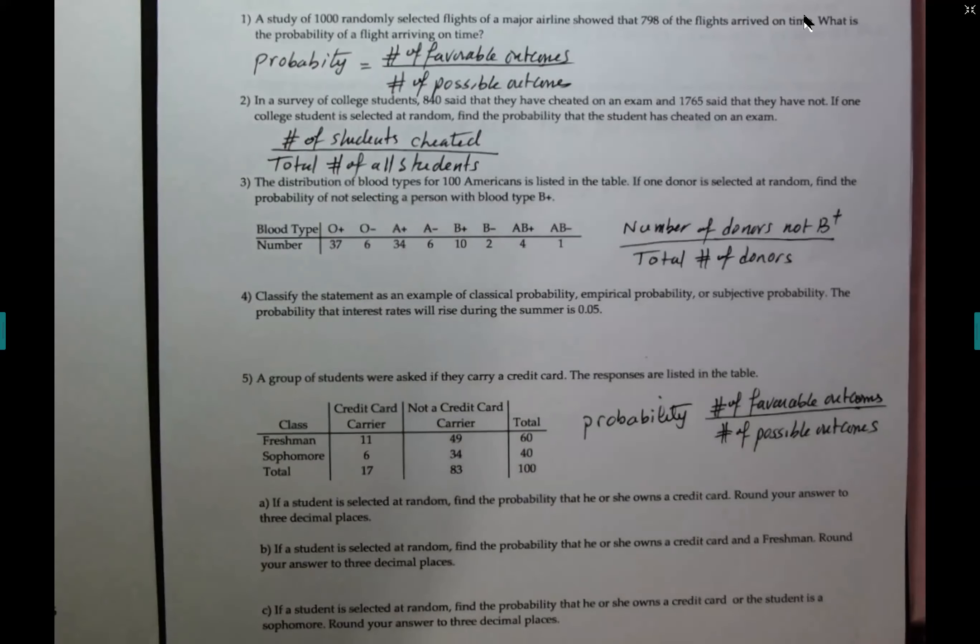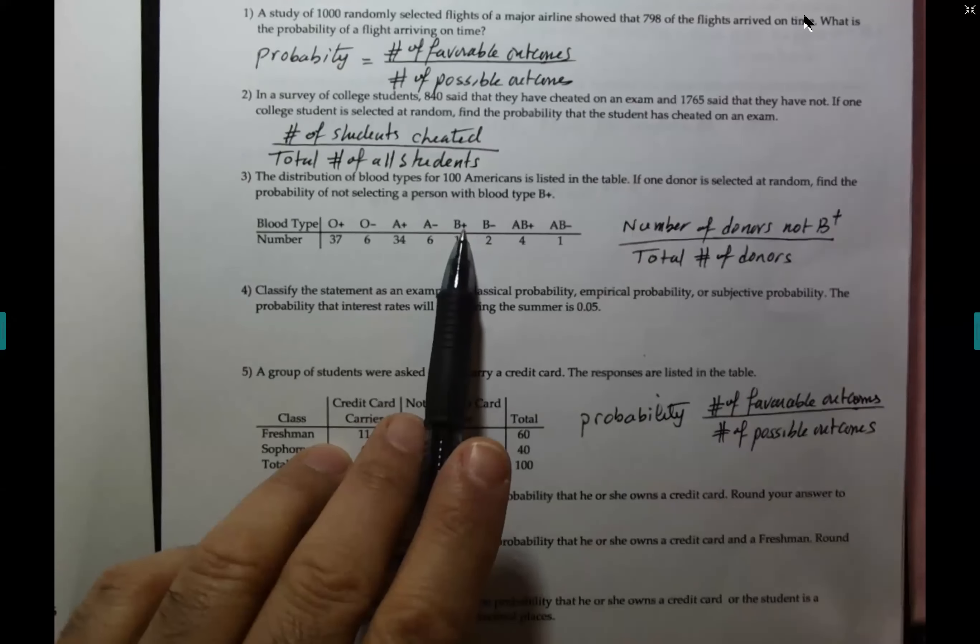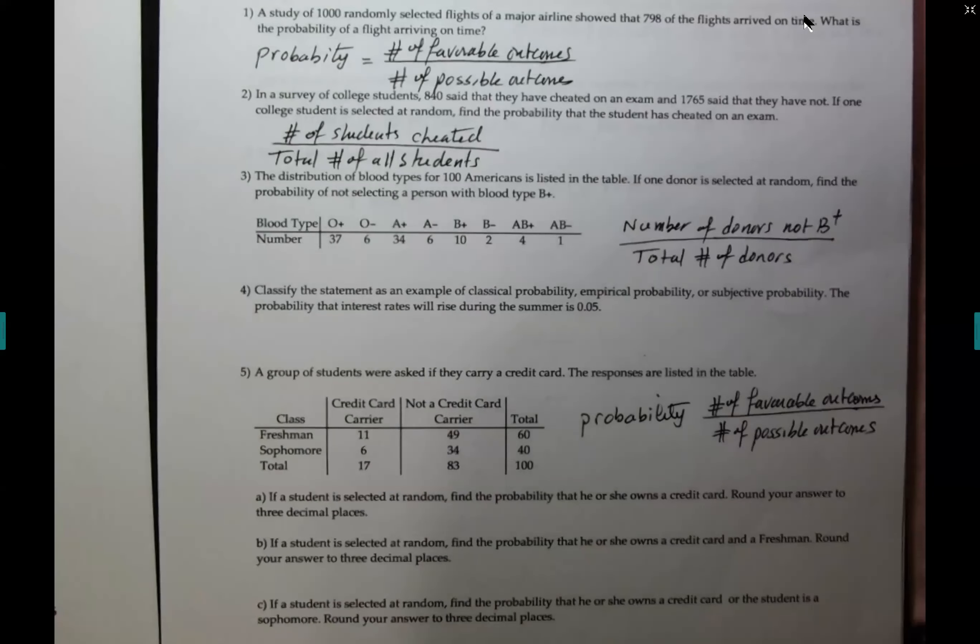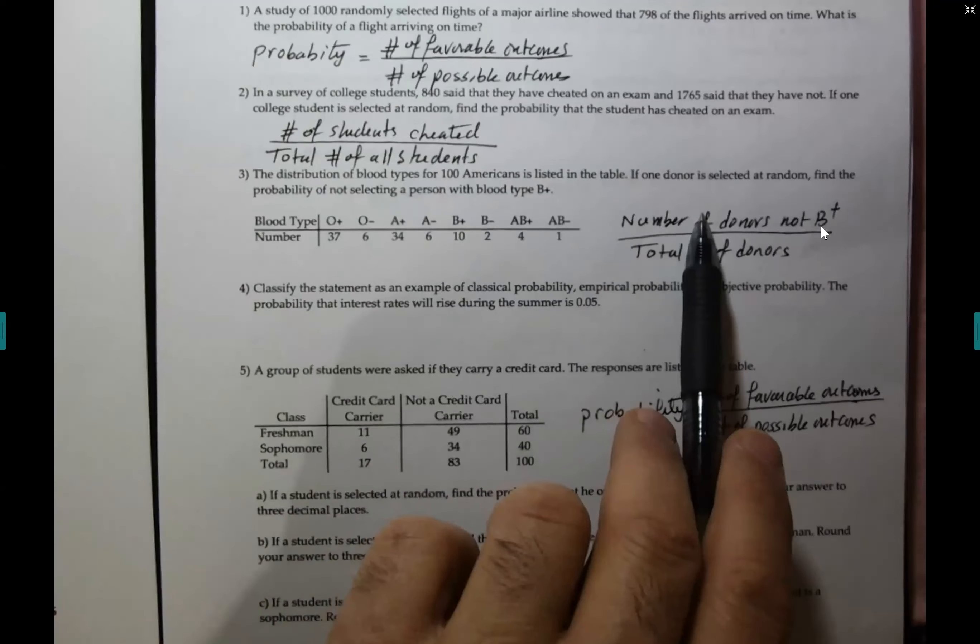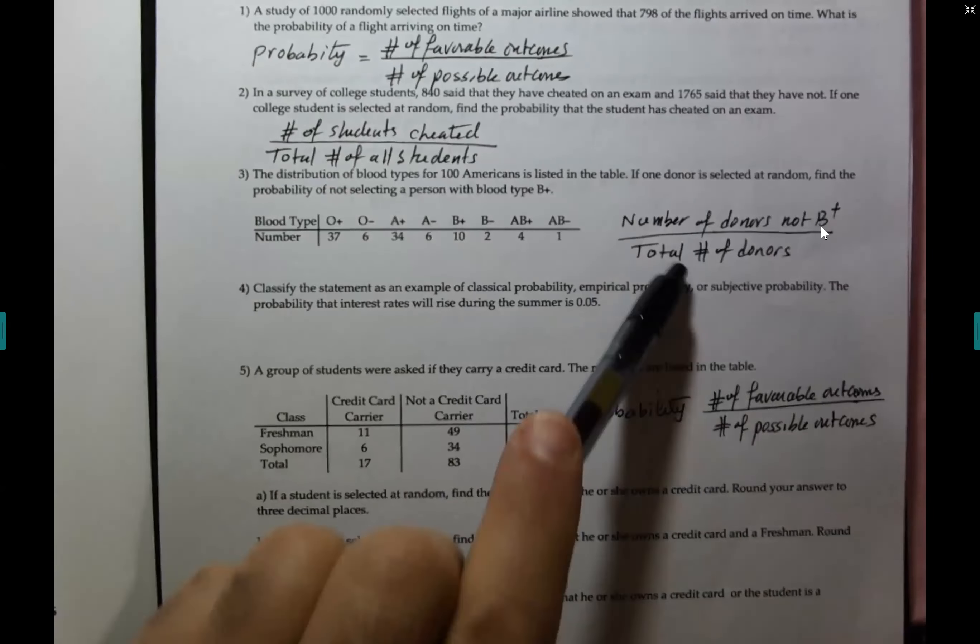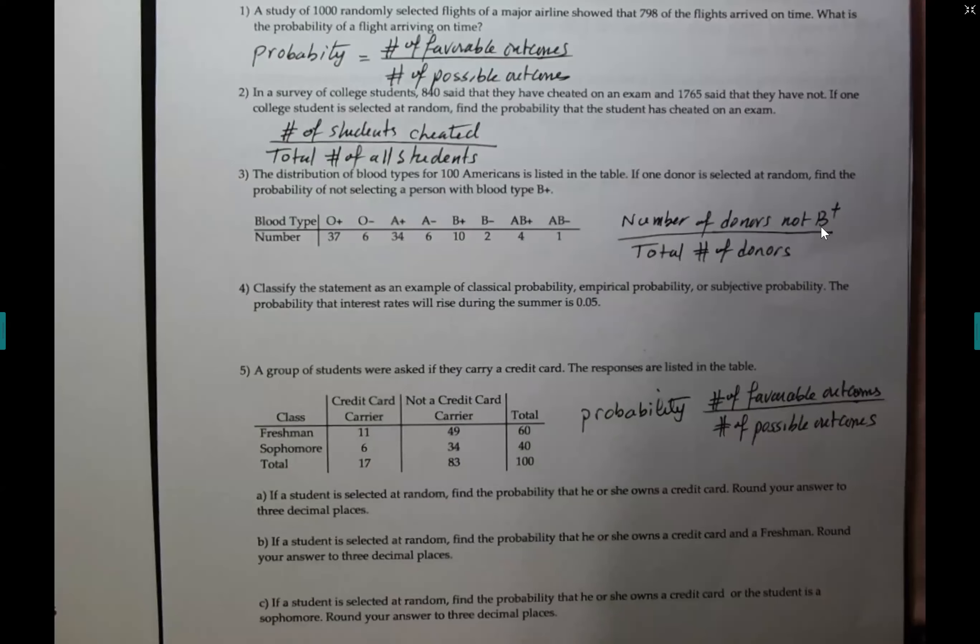Number three, distribution of blood types for 100 Americans is listed in the table. If one donor is selected at random, what's the probability of not selecting a person with blood type B? We don't want a B plus. We want everybody. Nineties. So you just add all of them and subtract the 10 to get that numerator. But the denominator is always everybody. Remember that.